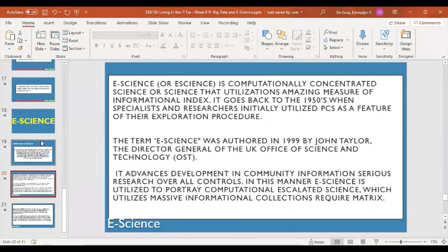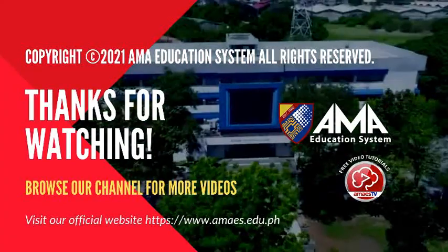So the term computational scientist refers to a person who is expert in computational science. It describes someone who is skilled in scientific computing. So those are under e-science or computational science. So that would be all.